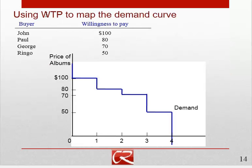Willingness to pay is really the fundamental determinant of demand, and it's best to think about the demand curve being built out of people's willingness to pay. As a simple illustration, let's take the example from Mankiw's textbook with several potential buyers, each with a different willingness to pay. At a price above $100, no one is willing to pay, so quantity demanded is zero. As the price gets down to $100, John is willing to buy, so quantity demanded grows to one. Further price declines don't do anything until we reach Paul's willingness to pay of $80, and then Paul becomes a willing buyer — quantity demanded grows to two, and so on.